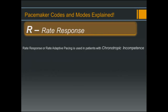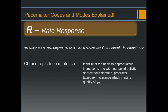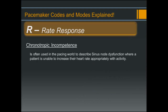Rate response, or rate adaptive pacing, is used in patients with chronotropic incompetence — defined as the inability of the heart to appropriately increase its rate with increased activity or metabolic demand, producing exercise intolerance that may impair quality of life. Examples include walking down a hallway or climbing several flights of stairs. Chronotropic incompetence is often used in the pacing world to describe sinus node dysfunction where the patient is unable to increase heart rate appropriately with activity.